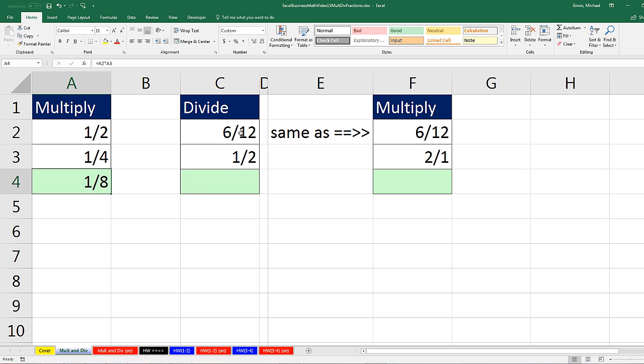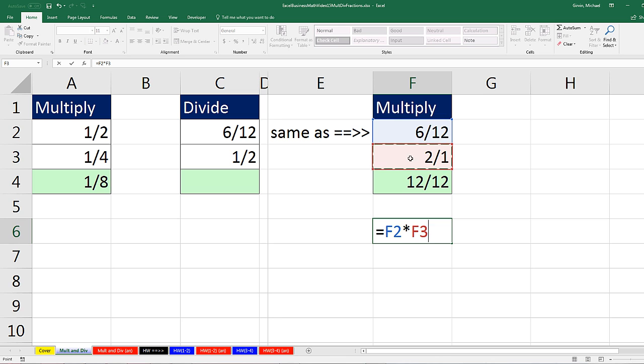Now dividing, 6 twelfths divided by 1 half. If we apply our rule, then we flip the second one, the denominator, and simply multiply. 6 times 2 is 12, and 12 times 1 is 12. So if we were to multiply these times the inverted or flipped one, we would get 12 over 12. If we did the formula again, times this one, now it's going to pull through the cell references the number formatting. But I can come right up to Number Group and Apply General. And sure enough, any number divided by itself is 1.